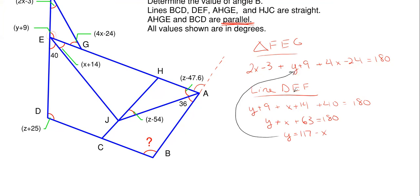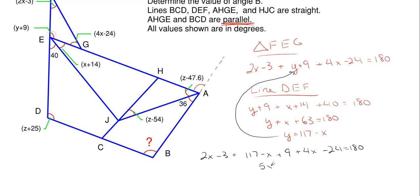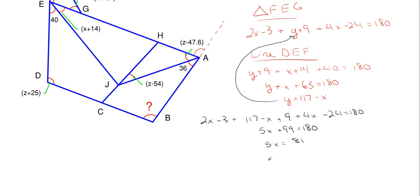Plugging y = 117 − x into the triangle equation, we get: (2x − 3) + (117 − x + 9) + (4x − 24) = 180. Simplifying, we end up with 5x + 99 = 180, so 5x = 81, giving us x = 81 ÷ 5 = 16.2.